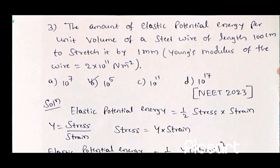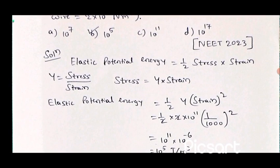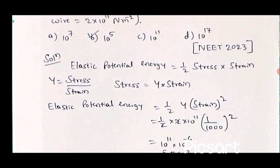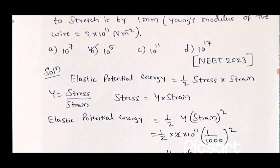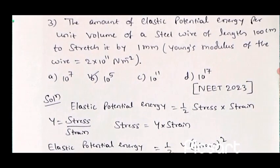As we know, Young's modulus equals stress by strain. After rearranging, stress equals Y into strain. Using this in the elastic potential energy expression, it becomes half into Y into strain squared. So the expression is half into Y into strain squared. Y is 2 into 10 to the power 11.